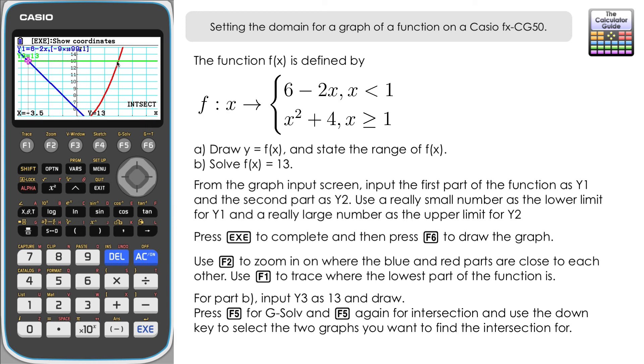Let's find the other intersection point then. So it's F5 intersect down to select the red piece of the graph and then we want the green y equals 13 and here we have our intersection when x equals 3. So that is our second solution then. So we've got x equals negative 3.5 and x equals 3 as being when f(x) equals 13.